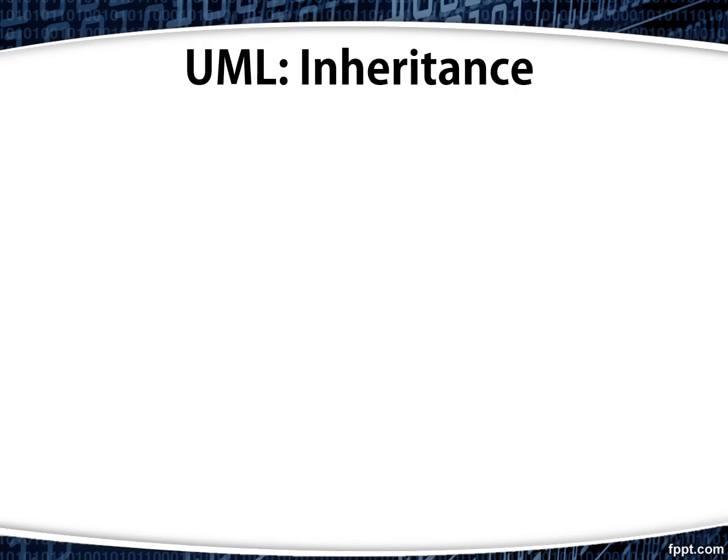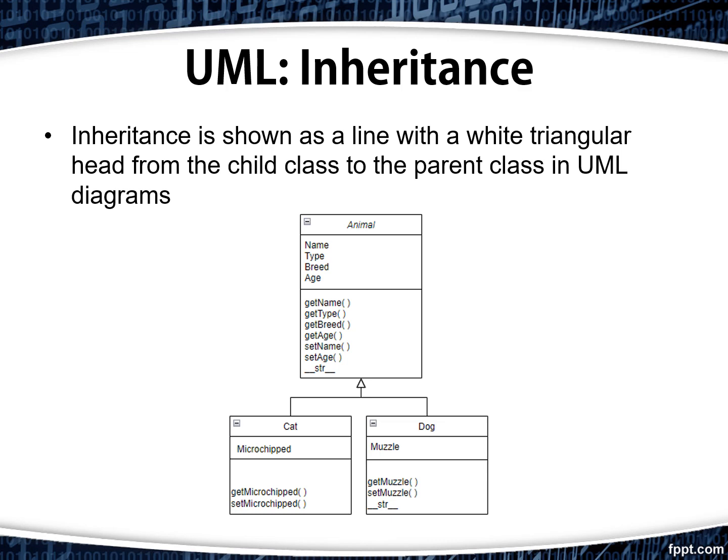Inheritance is shown as a line with a white triangular head pointing from the child class to the parent class in UML diagrams. Here in this example, you can see that both the dog and cat classes point to their parent class, animal.